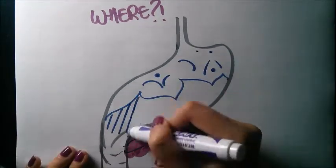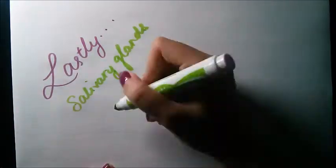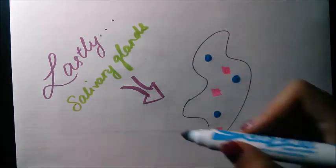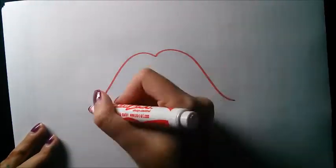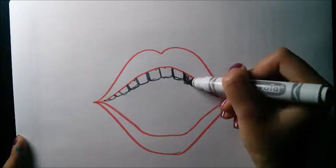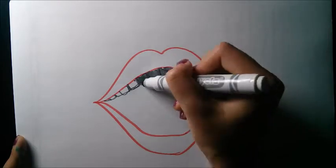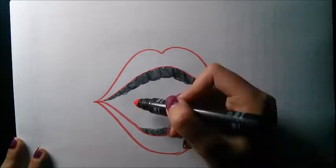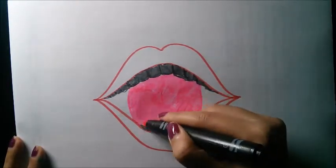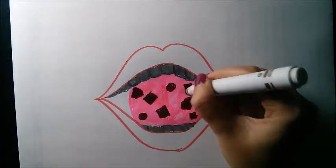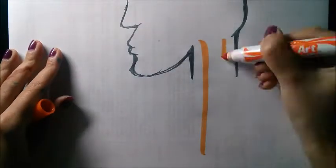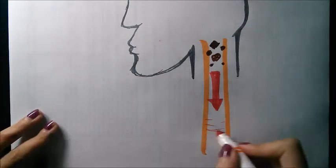The salivary glands initiate the process of digestion through the help of enzymes and proteins. This entire process takes place in the mouth, where the food has been chewed, ground, and acted upon by the saliva produced in the salivary glands. This semi-digested food then travels from the mouth, the first region of digestion, to the stomach, which is the second region of digestion.